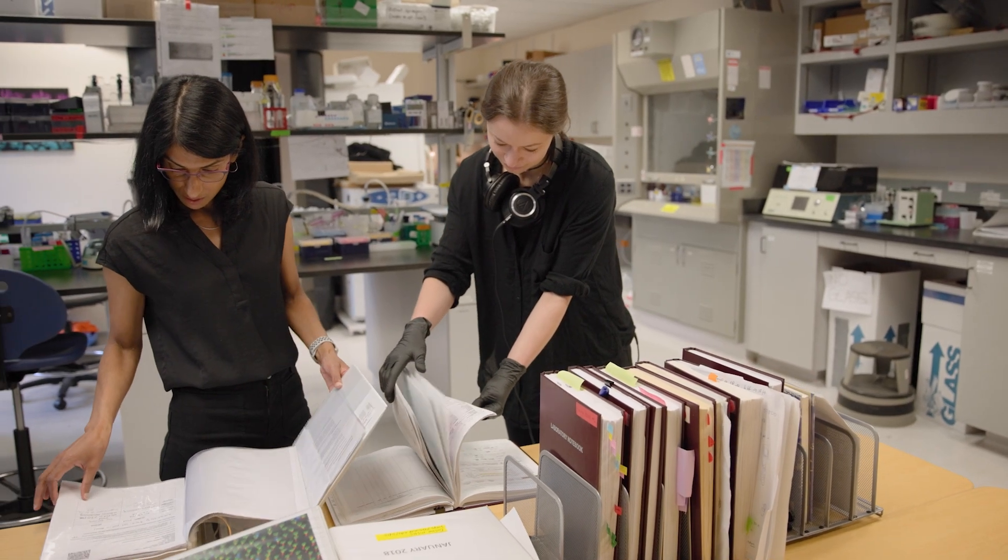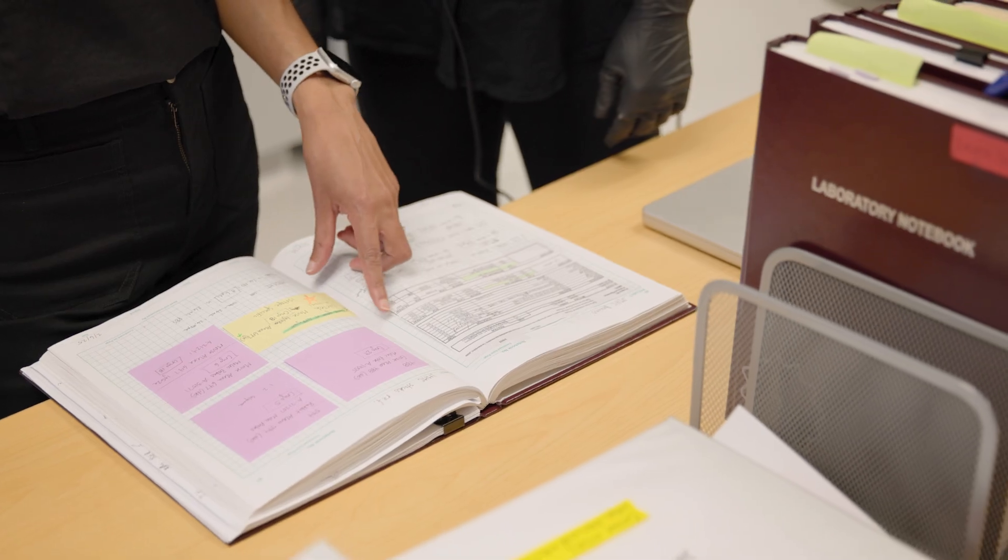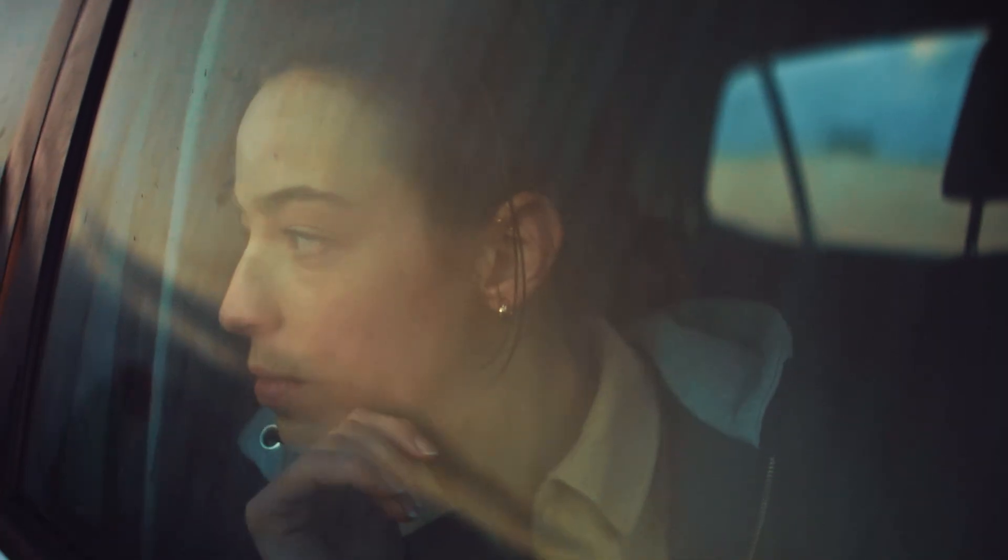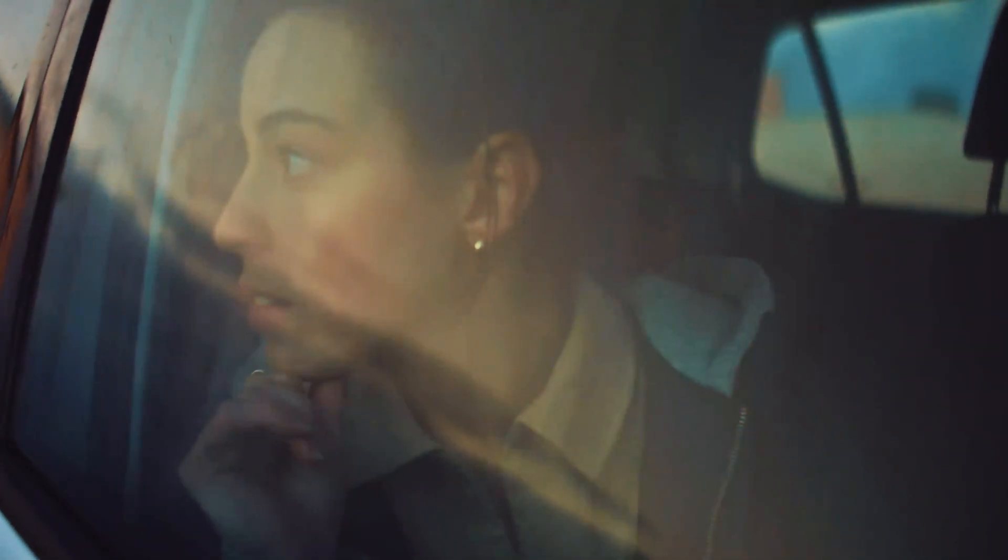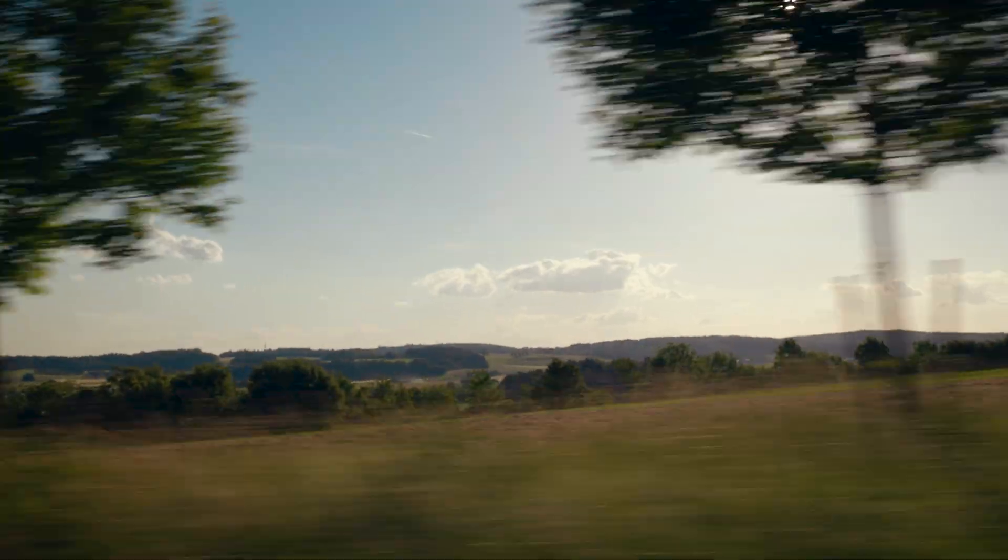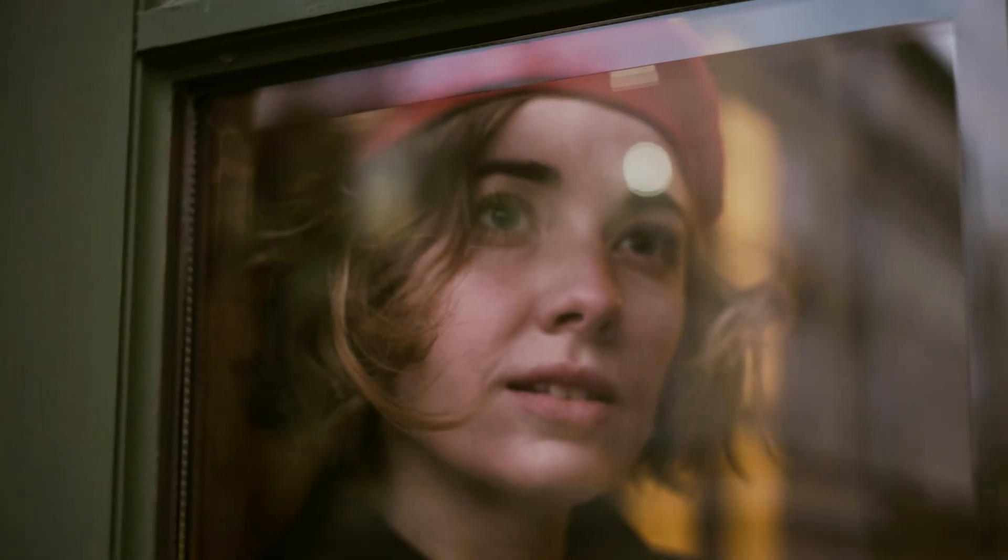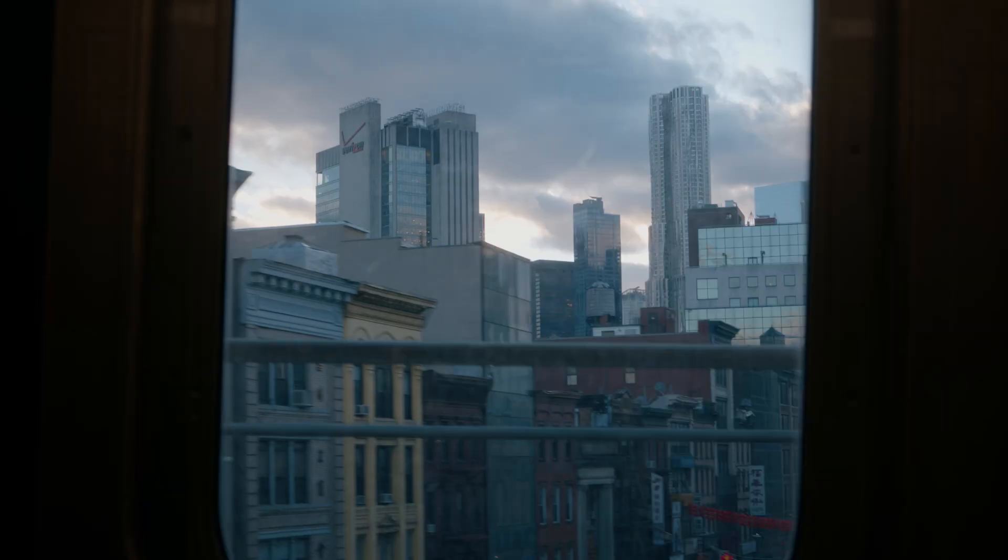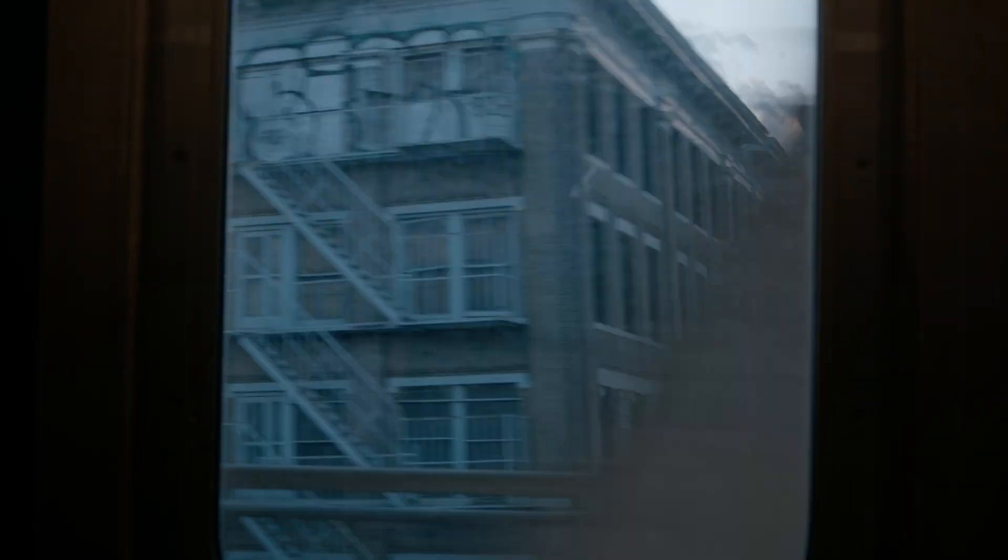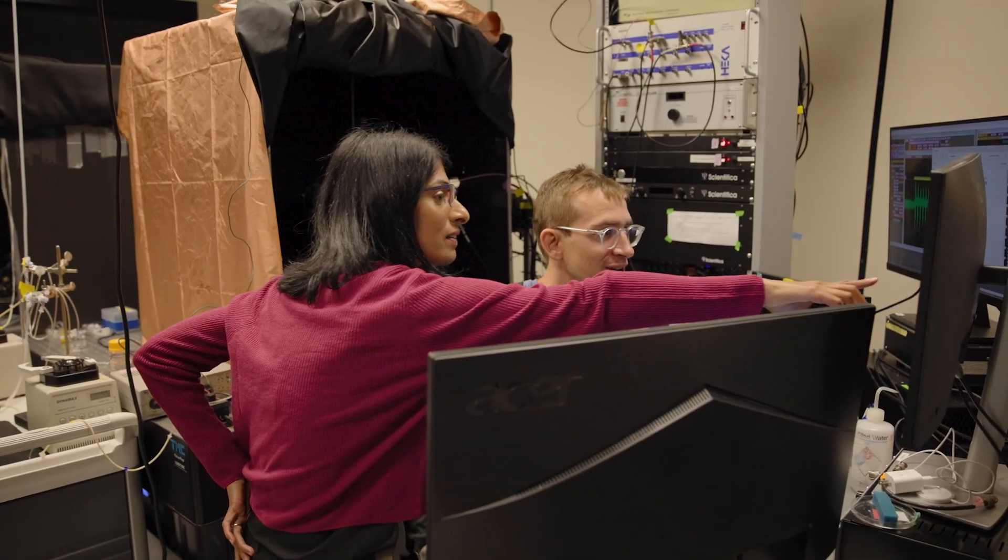We recently discovered direction-selective ganglion cells. These cells can sense the direction in which the world is moving and rapidly send that signal to the brain. In response, the brain tells the eye muscles to follow in the same direction, and the result of this is that the image of the world stays relatively stable on the retina and this prevents our image of the world looking blurry and unstable.